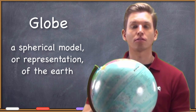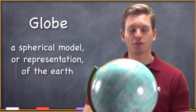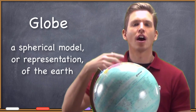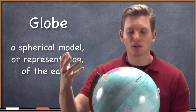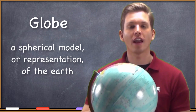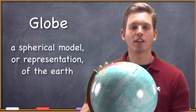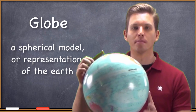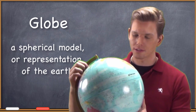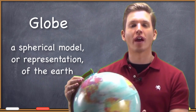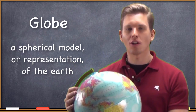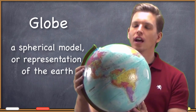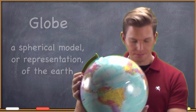A globe is actually a smaller representation of the Earth, of course — the roughly spherical Earth in three dimensions. So we live on the Earth, on the world, but if we make a model, a representation of the Earth, then we've made a globe. You'll also notice that it is tilted, and we'll talk about the axial tilt in a later lecture.